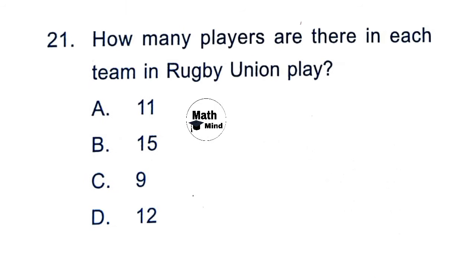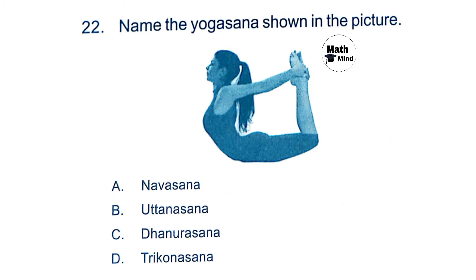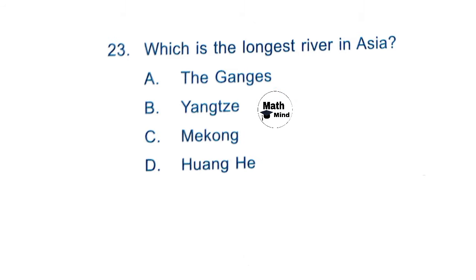Question 21: How many players are there in each team in rugby union? Option B is correct: 15. Question 22: Name the yogasana shown in the picture. Option C is correct: Dhanurasana.